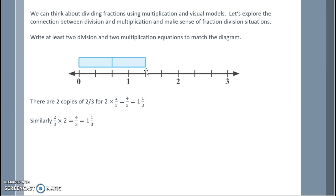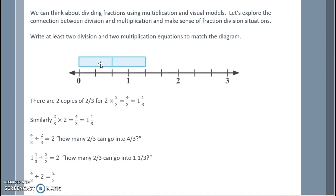Similarly, we can reverse this as two thirds times two, which is four thirds, or one and one third. For division, we ask how many two thirds can go into four thirds. So how many of these two thirds goes into four thirds total? Four thirds divided by two thirds gives us two pieces. We could also ask how many two thirds can go into one and one third, which breaks down to four thirds divided by two thirds. And if we have four thirds and break into two different groups, each group has two thirds. Similarly, one and one third divided by two is two thirds as well.